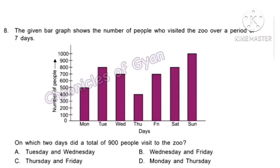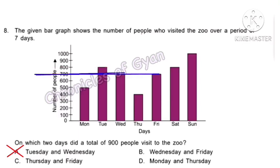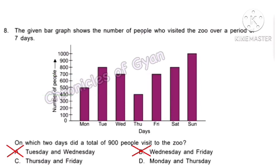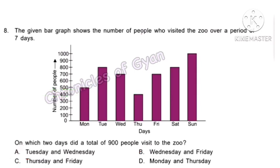Question 8. The given bar graph shows the number of people who visited the zoo over 7 days. On which 2 days did a total of 900 people visit? Option A: Tuesday and Wednesday — 800 plus 700 equals 1,500. Option B: Wednesday and Friday — 700 plus 700 equals 1,400. Option C: Thursday and Friday — 400 plus 700 equals 1,100. Option D gives the correct total of 900. Hence option D is the answer.